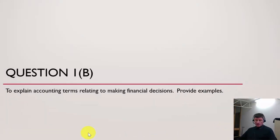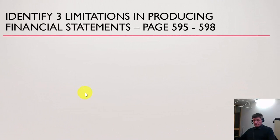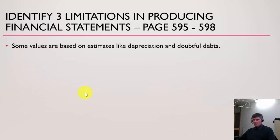So that's a series of questions that could be asked — not comprehensive of course, but ones I wanted to give you feedback on based on the mid-year exam. In question 1B, it relates to accounting terms for making financial decisions and you have to provide examples as well. Here there is a question we haven't yet covered, but I'll include it to give an indication — you can use this for end of year revision.